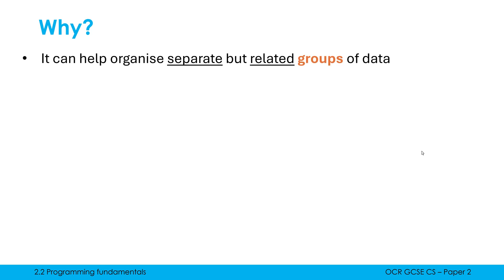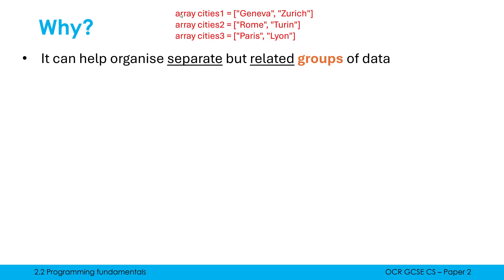Why do we go to the trouble of creating 2D arrays? You can even have 3D arrays or higher dimensions, though they're not at GCSE. It can help organize separate but related groups of data. The equivalent would be three separate 1D arrays with their own identifiers. But if I'm storing every country on earth, that's a huge amount of code and better to group it together. Grouping means I can do processing much more easily - I can iterate through one data structure instead of 200 separate arrays. We'll look at how to do that processing in the next video.